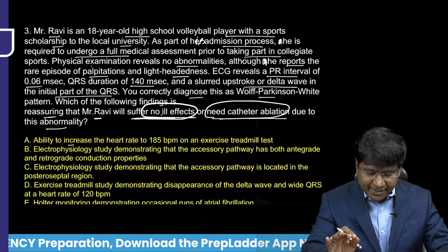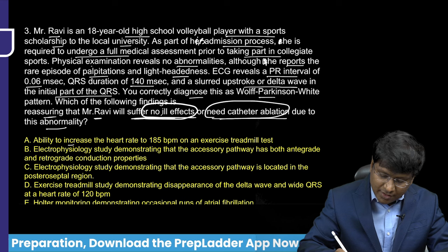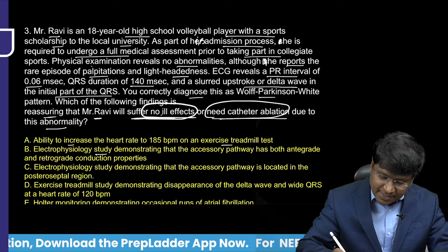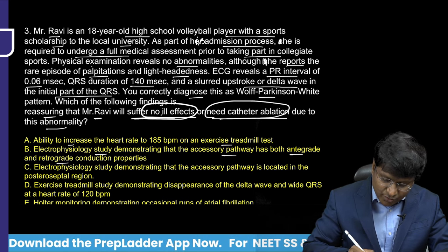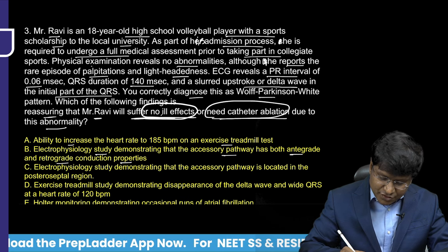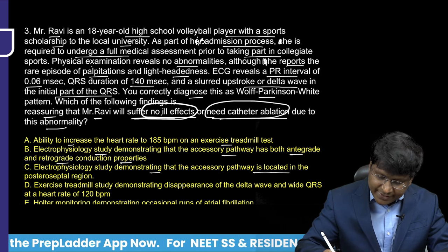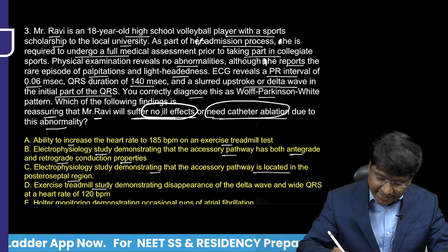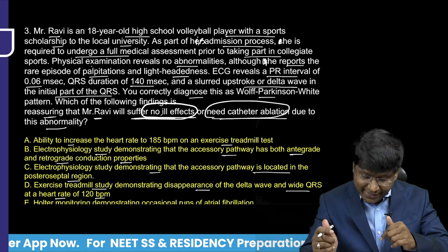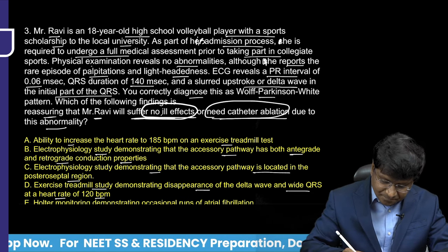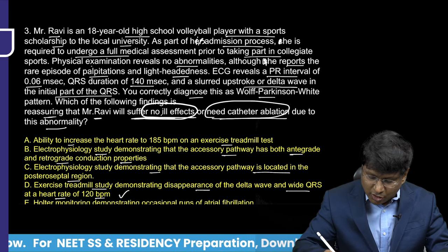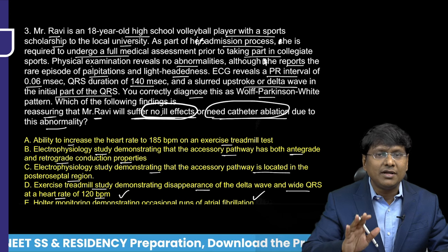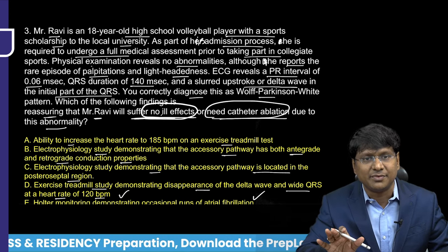Options: ability to increase heart rate to 185 bpm on treadmill; electrophysiology study showing the accessory pathway has both anterograde and retrograde conduction; EP study showing the accessory pathway is in the posterior septal region; treadmill study showing disappearance of the delta wave and wide QRS at a heart rate of 120 bpm; or Holter monitoring showing occasional runs of atrial fibrillation.